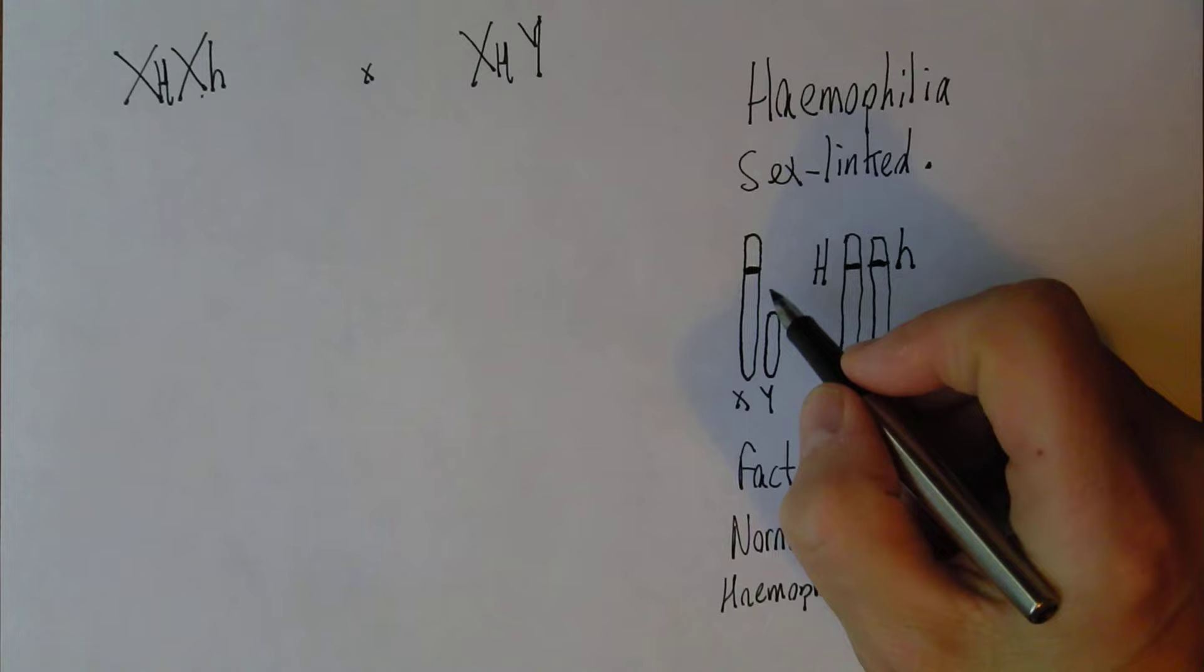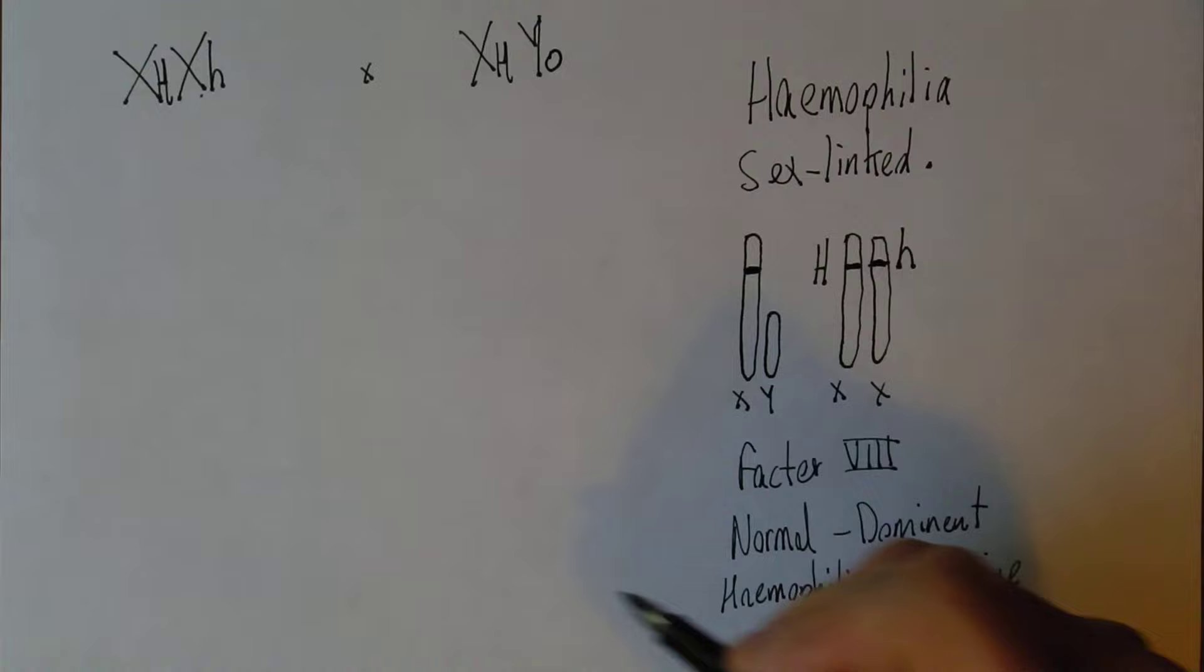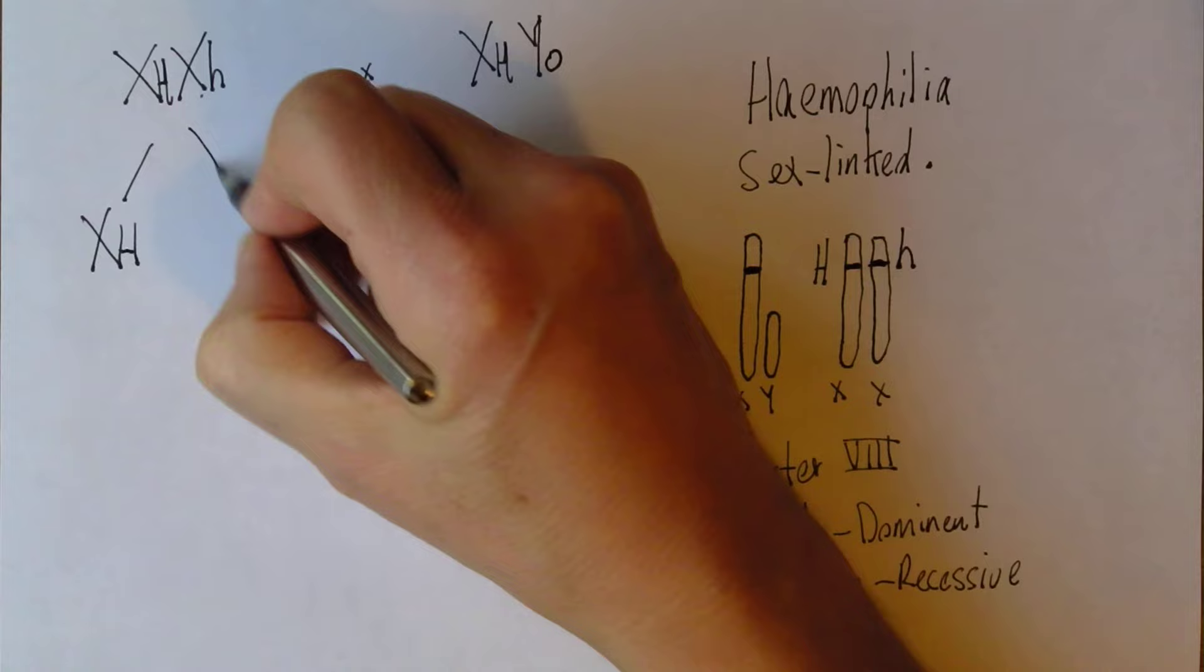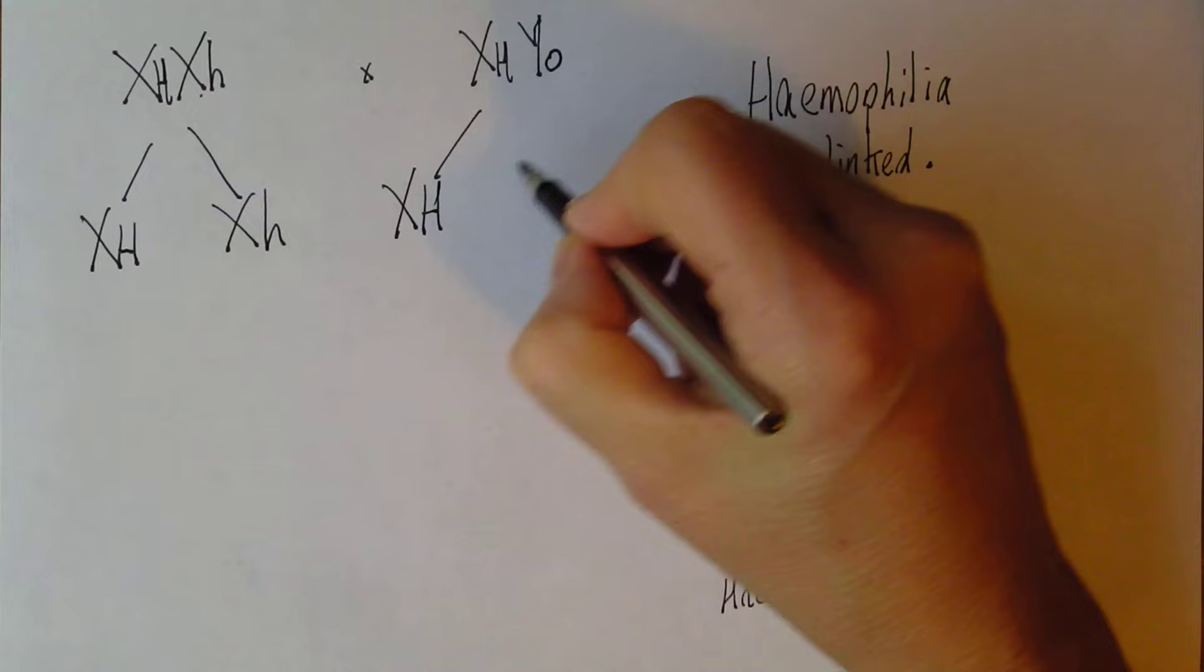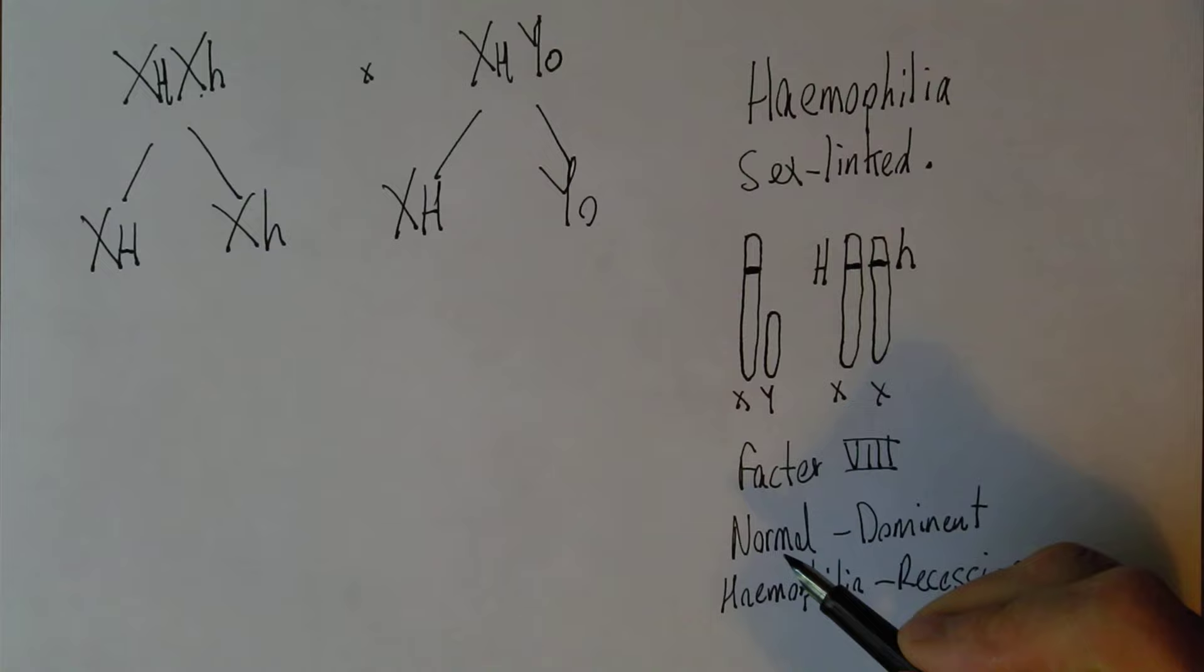But on the Y chromosome there is no homologous position, so the Y chromosome is a zero—it's not carrying anything. So as we would expect, we produce gametes, and they will be the range of gametes that we could have. Now this one could combine with that one, giving us a girl.